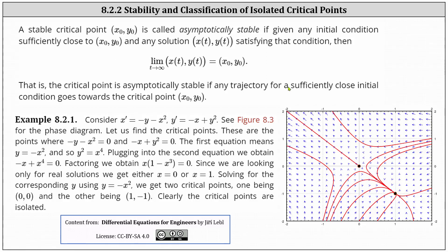Let's look at an example. Consider the system x′ = −y − x² and y′ = −x + y². On the right we have the graph of the phase portrait. To find the critical points, we solve −y − x² = 0 and −x + y² = 0 simultaneously. Solving the first equation for y gives y = −x². Squaring both sides gives y² = x⁴. Substituting into the second equation gives −x + x⁴ = 0, which factors as x(1 − x³) = 0. Since we are looking for only real solutions, we get x = 0 or x = 1, giving the critical points (0, 0) and (1, −1), which are plotted in black on the right.